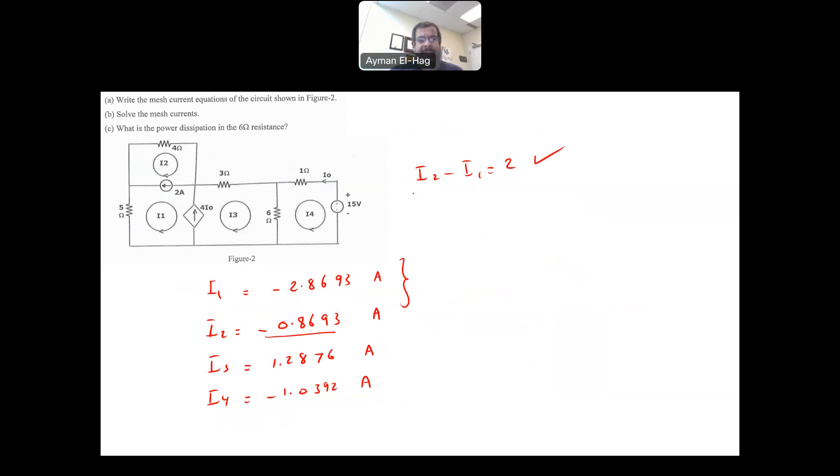The part C says find the power dissipation in the 6 ohm. Now the power across the 6 ohm is equal to I squared times R. Now the current that goes through R is either I4 minus I3 or I3 minus I4. Actually it doesn't really matter, both will give you exactly the same answer. So I will say I4 minus I3 squared times R. So I4 is minus 1.0392 minus 1.2876 squared times R, which is 6. So this is how you can do that. Let me do the calculation for this.